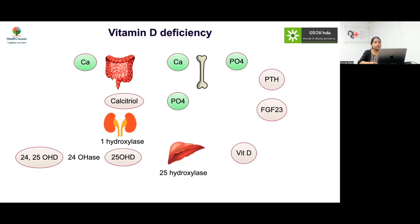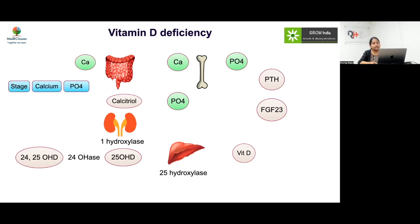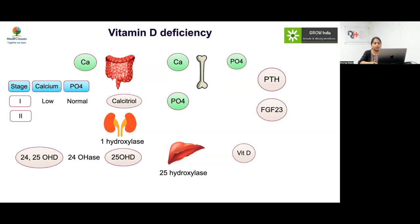Vitamin D deficiency is caused by reduced sunlight exposure, which decreases calcitriol production. In early stages, calcium is low but phosphate is normal; PTH rises to compensate, normalizing calcium but increasing phosphate excretion — so phosphate falls. In late stages, the body fails to compensate for hypocalcemia, and both calcium and phosphate levels are low.